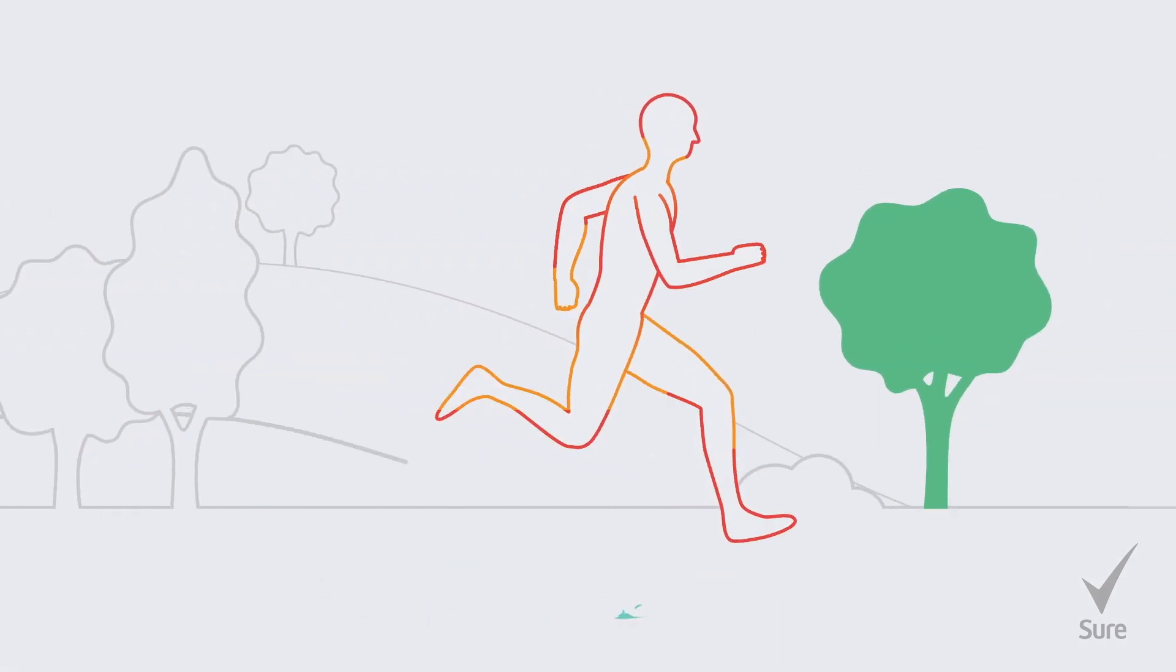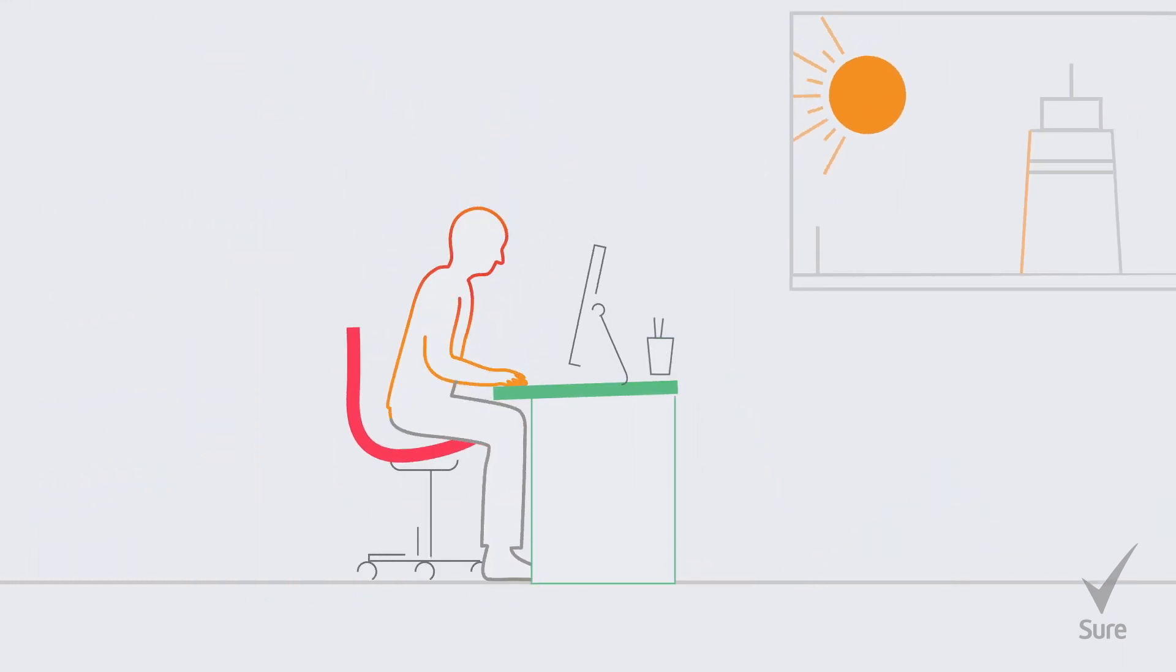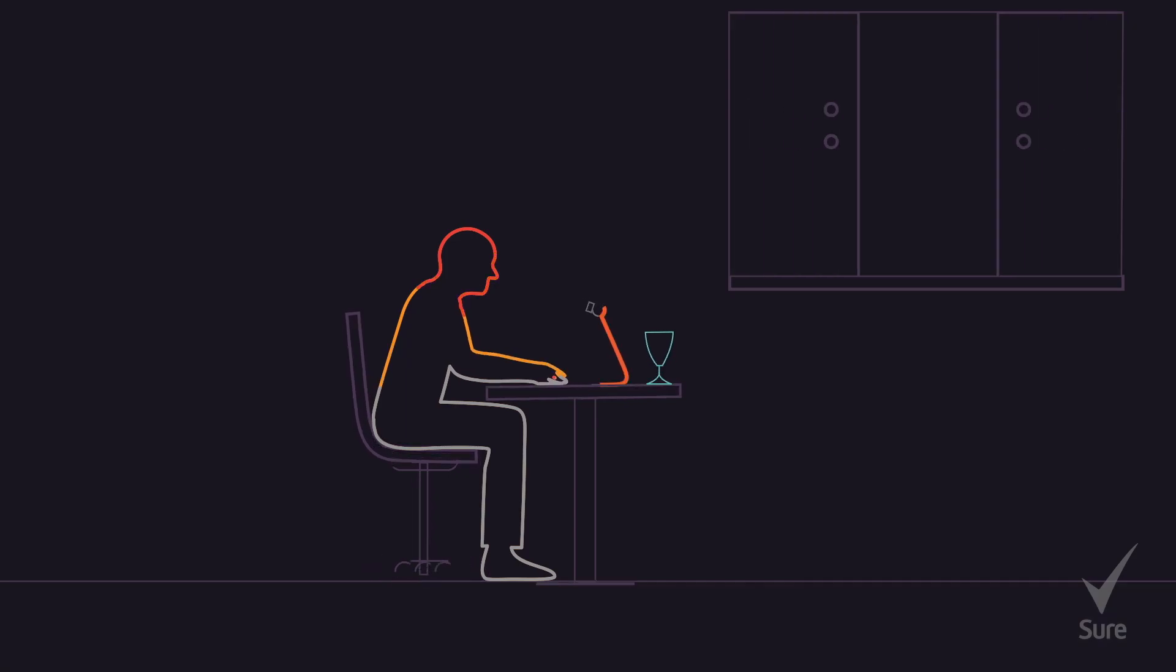Lots of things can make us sweat: physical activity, heat, stress and strong emotions, and hot or spicy food.